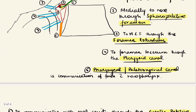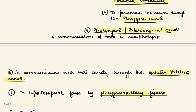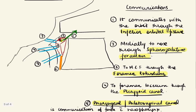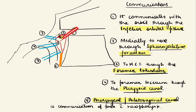It also communicates inferiorly with the oral cavity through the greater palatine canal, and laterally with the infratemporal fossa through the pterygomaxillary fissure. To recap: it communicates to the orbit through the inferior orbital fissure, to the nasal cavity through the sphenopalatine foramen, to the middle cranial fossa through the foramen rotundum, to the foramen lacerum through the VDN canal, to the nasopharynx by the pharyngeal or palatovaginal canal, to the oral cavity by the greater palatine canal, and to the infratemporal fossa by the pterygomaxillary fissure.